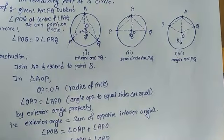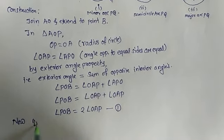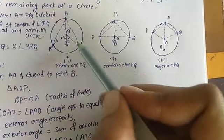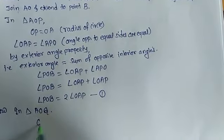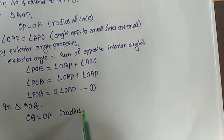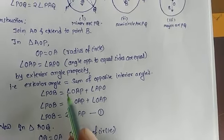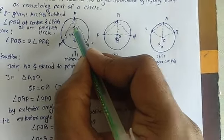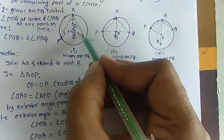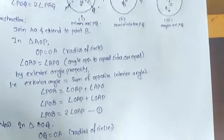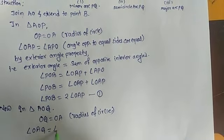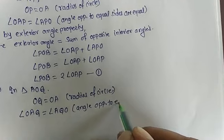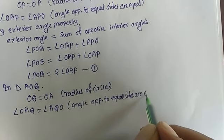Now in triangle AOQ, OQ and OA are also radii of the circle, so OQ equals OA. Therefore, by the same theorem, angles opposite to equal sides are equal: angle OAQ equals angle AQO.